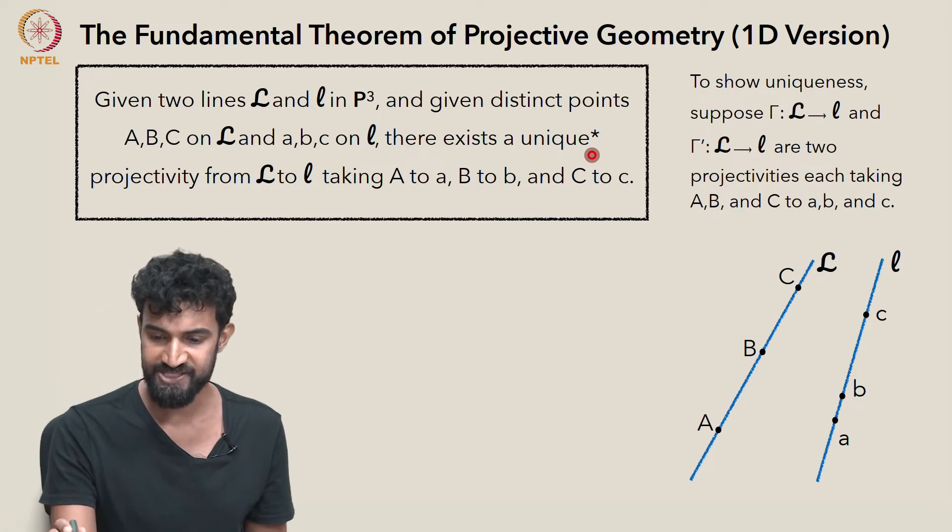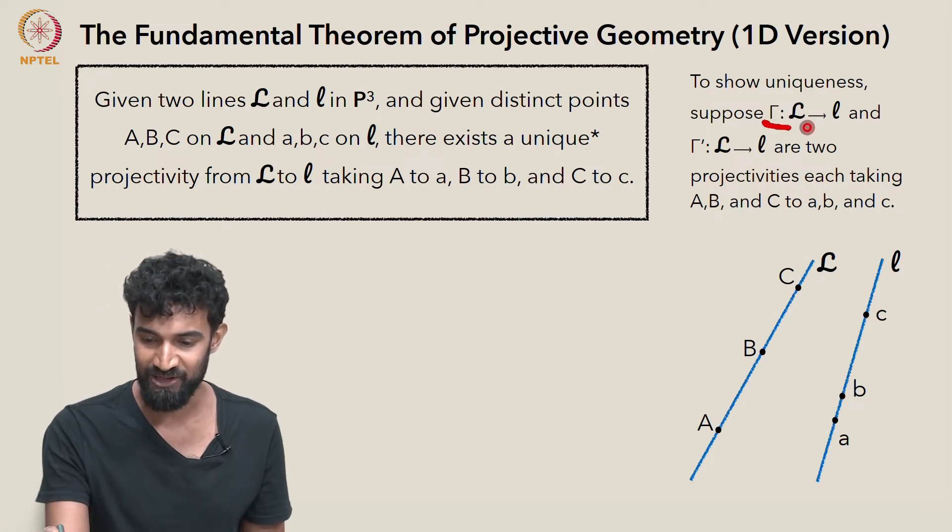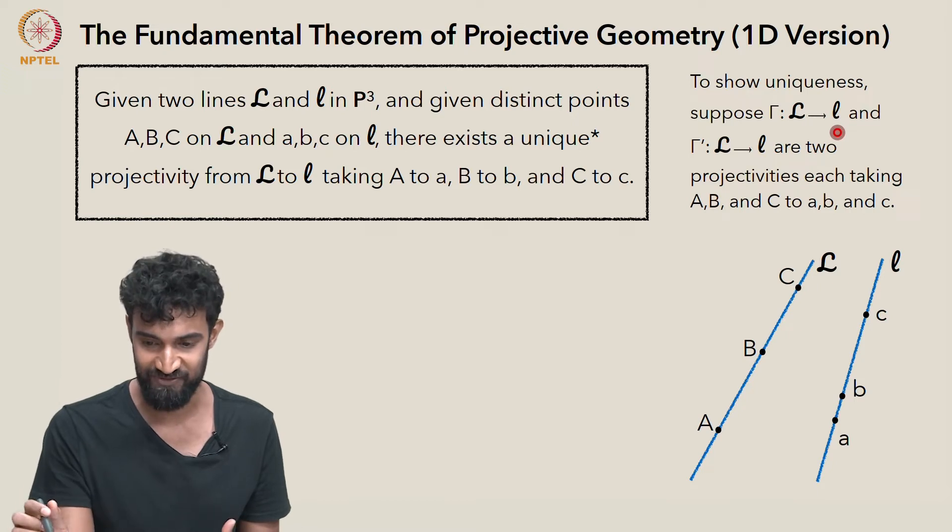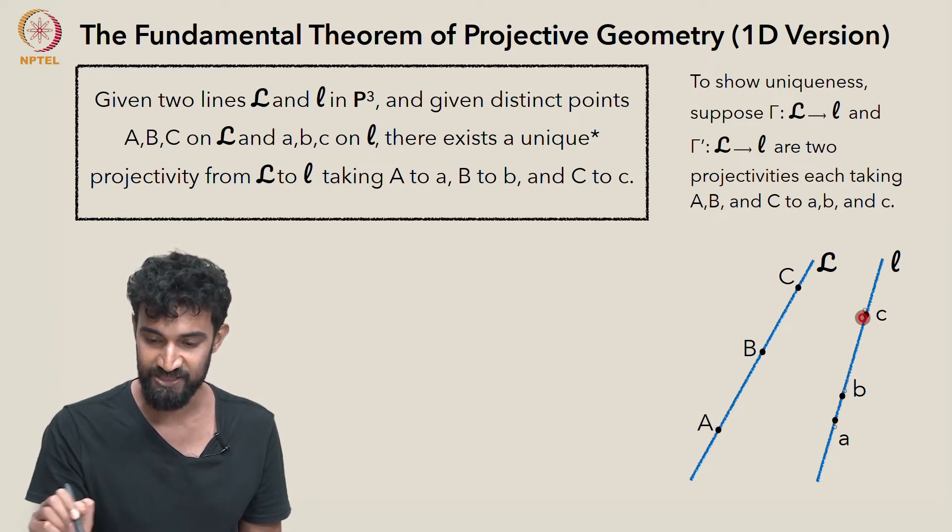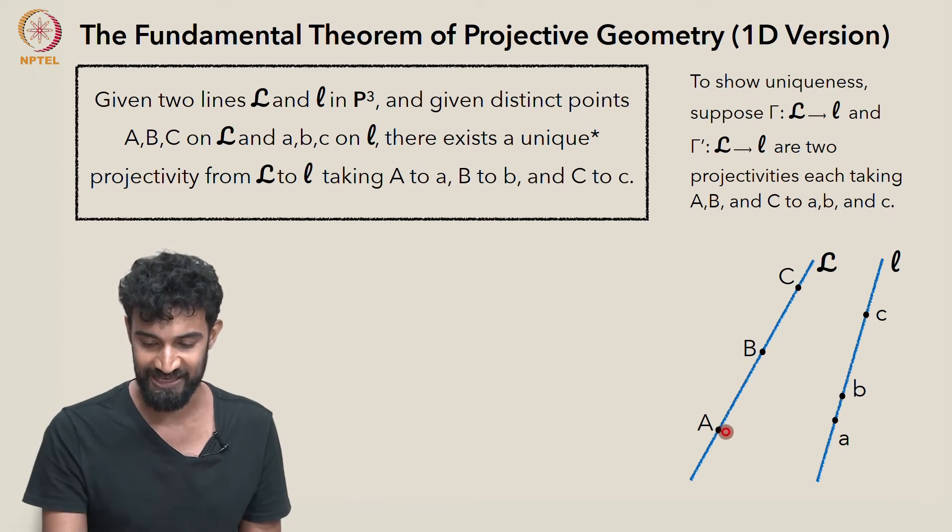let's suppose that gamma is one projectivity from L to l that takes A, B, and C to a, b, and c. And let's suppose that gamma prime is another projectivity, taking A, B, and C to little a, little b, and little c.